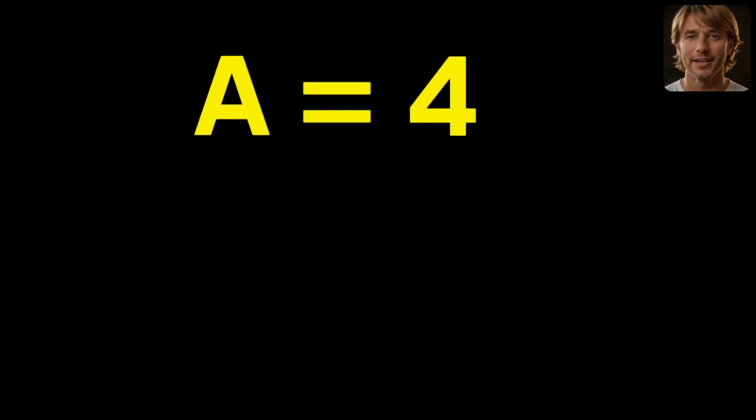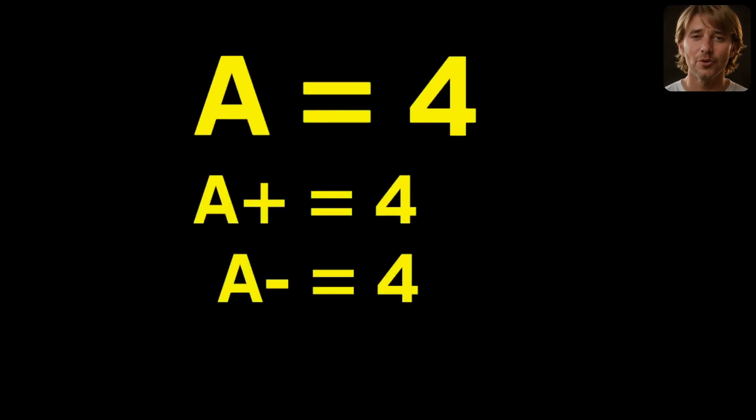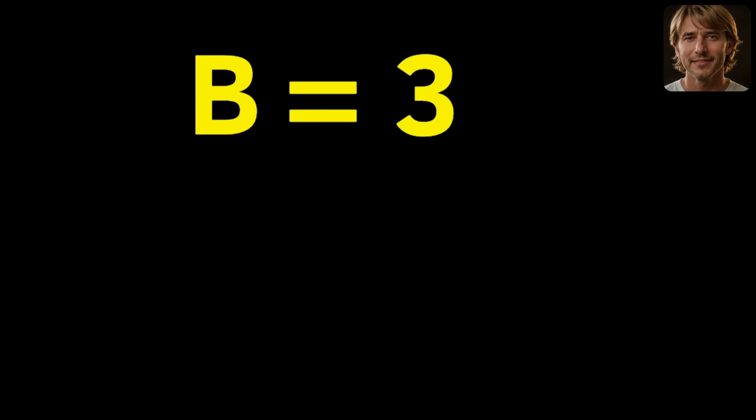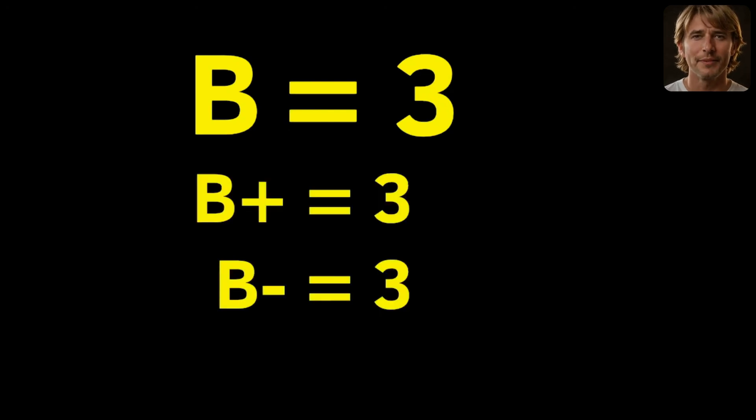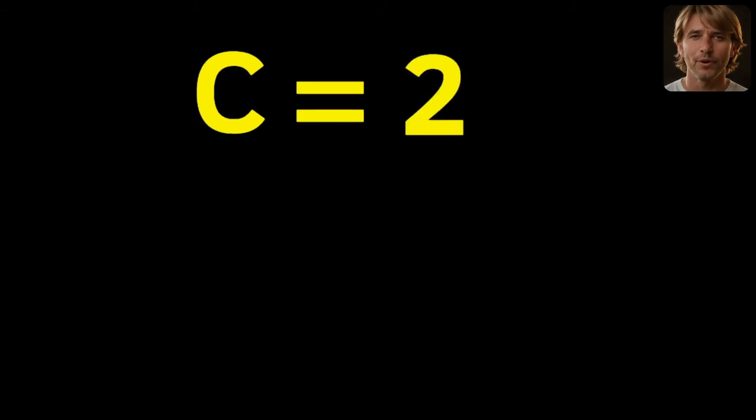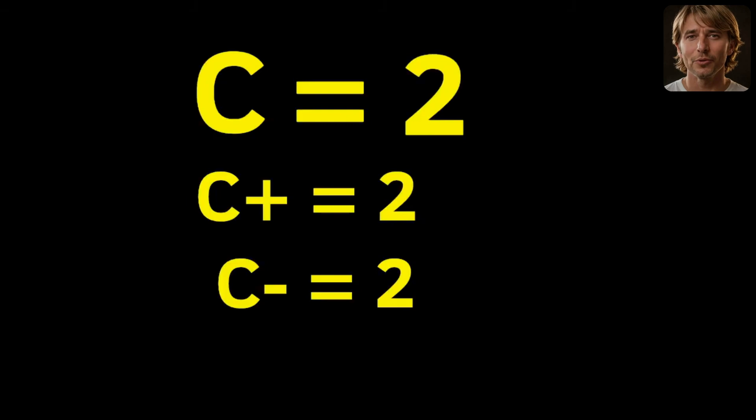An A is worth 4 points. An A plus is also worth 4 points, and so is an A minus. A B is worth 3 points. A B plus is also worth 3 points, and so is a B minus. C's are worth 2 points. A C plus is also worth 2 points, and so is a C minus.